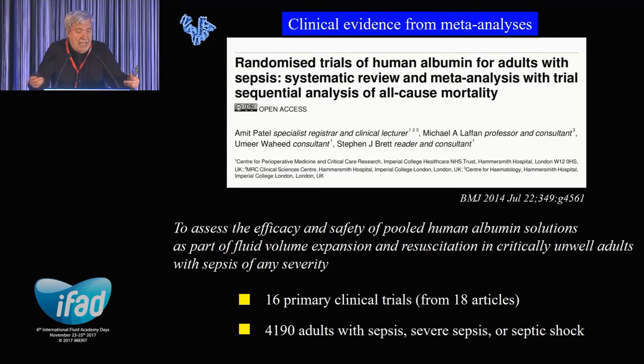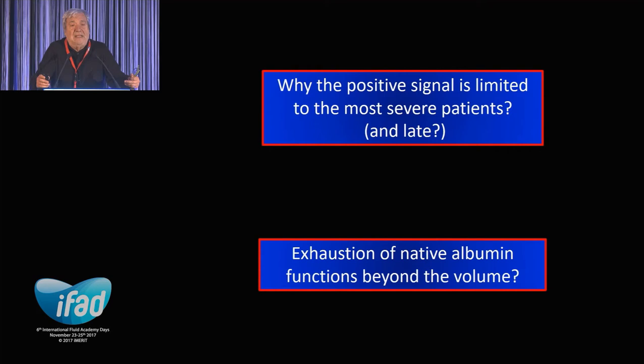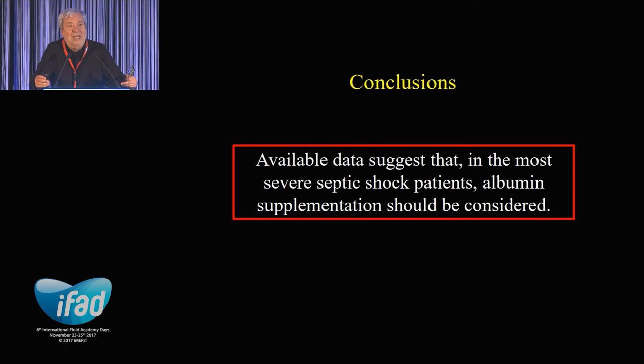To conclude, I think that why the positive signal is limited to the most severe patients, and quite late. I always consider the albumin as a little soldier that circulates in extracellular space with a lot of properties, including the oncotic, which is not the most important. The albumin replacement plays a role when the soldiers disappear, are too few, or they are functionally impaired. The oxidation status of albumin appears to be very important, although I don't have time to go through, but up to 30-40% of the albumin that we have in a patient is unable, as an example, to modulate NO and to act as a radical scavenger. So there is still a lot to understand and to proceed.